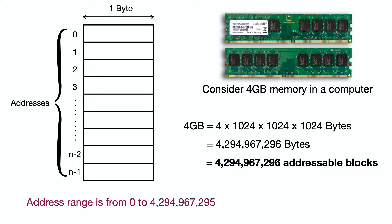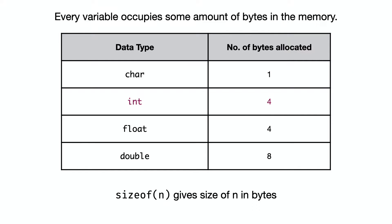When a variable is declared — int, float, double, or any datatype — it is allocated space in memory. The variable gets a certain number of bytes allocated, and that depends upon the data type of the variable. The number of bytes can range from 1 byte to 8 bytes.